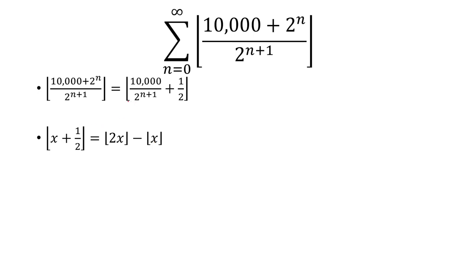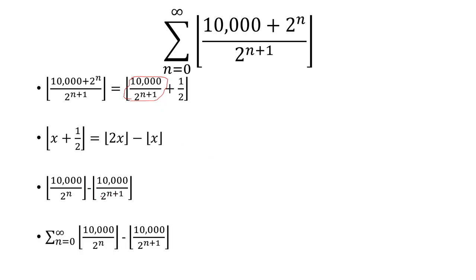And here, x is going to play the role of 10,000 all over 2 to the n plus 1. So we're going to double that. And when I double that, the 2 to the n plus 1 is going to change to 2 to the n, because 2 over 2 to the n plus 1 is just 2 to the n. And then I'm going to subtract it with x here. So 10,000 over 2 to the n plus 1. And that's what's going to be replaced inside the sum here.